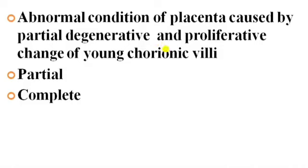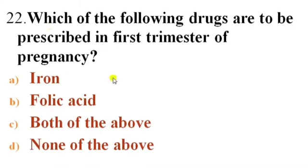The hydatidiform mole is a rare mass or growth that forms inside the uterus at the beginning of pregnancy and is a type of gestational trophoblastic disease. There are two types: partial molar pregnancy, where there is an abnormal placenta and some fetal development; and complete molar pregnancy, where there is an abnormal placenta but no fetus.